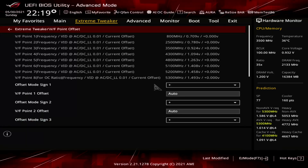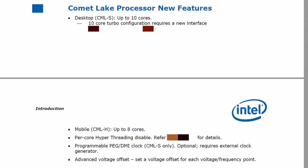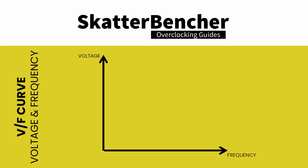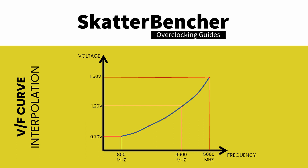VF Point Offset is the ASUS name for an Intel feature called Advanced Voltage Offset. Advanced Voltage Offset is an extension of the adaptive voltage mode that we're already very familiar with. It was first introduced with the Comet Lake processors in 2020. Before we can understand the function and purpose of Advanced Voltage Offset, we must first understand what the VF curve is. An Intel processor determines a minimum voltage required for each frequency based on a voltage frequency curve — we also call this the VF curve. It does this for each core separately. This VF curve is essentially a table that maps the required voltage for a given frequency. This table is generated from multiple factory fused VF points using interpolation.